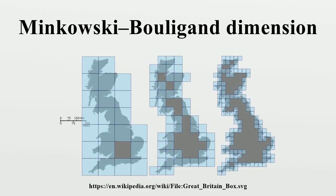In fractal geometry, the Minkowski-Bouligand dimension, also known as the Minkowski dimension or box-counting dimension, is a way of determining the fractal dimension of a set S in a Euclidean space R^n, or more generally in a metric space.